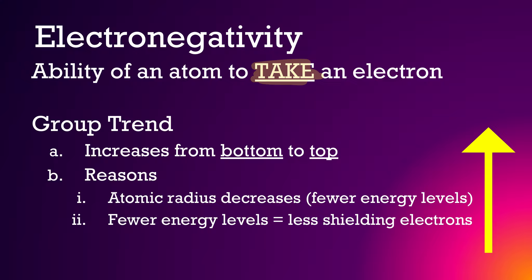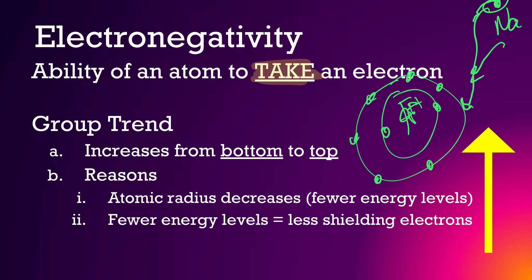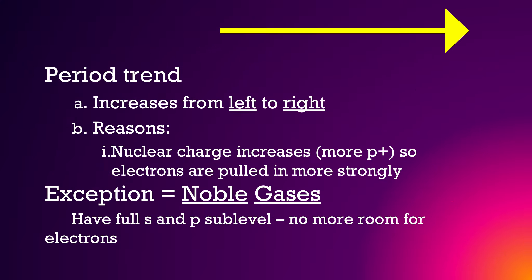When you have fewer energy levels — let's look at fluorine. Fluorine has energy levels one and two, and we have nine protons in the nucleus. Because there are only two energy levels, these electrons feel the force of the positively charged nucleus more than if there were more energy levels. So this positive charge makes it easier to take an electron from another atom because the nucleus isn't shielded. This electron from sodium is more readily taken by fluorine than by iodine, which has more electrons and more energy levels to shield that positive force of the nucleus.